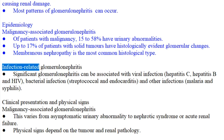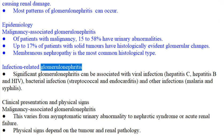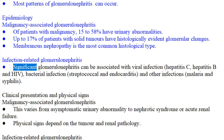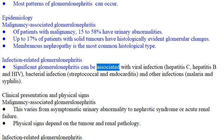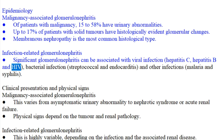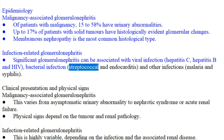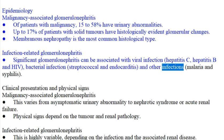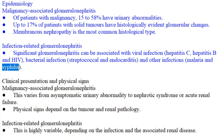Infection-related glomerulonephritis: significant glomerulonephritis can be associated with viral infection — hepatitis C, hepatitis B, and HIV; bacterial infection — streptococcal and endocarditis; and other infections including malaria and syphilis.